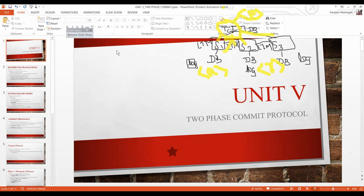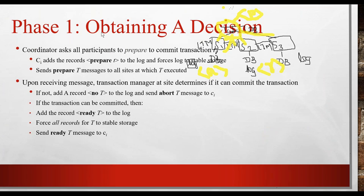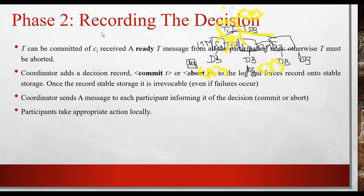Phase two is about recording the decision. After getting the ready message from sites, the coordinator needs to send a response. If a site gave a ready message, it means that site is ready for execution and the coordinator can proceed with instructions for that site. If a site gave an abort message, the coordinator records that this site has been aborted and sends no further messages to it. After completing execution, the coordinator adds a commit record.